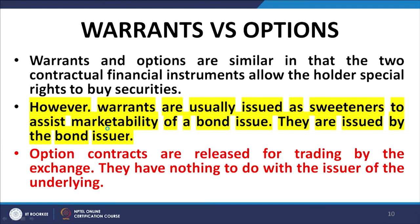Then we discussed the difference between warrants and options. Warrants are sweeteners that are usually attached either to the issue of preference shares or to the issue of debentures by a company. These instruments are tradable parts of the primary instrument and they entitle the holder to buy one or more equity shares in the company at terms specified in the issue document — at a price called the exercise price and on or before a date called the expiry date. Warrants are issued by the issuer company itself.